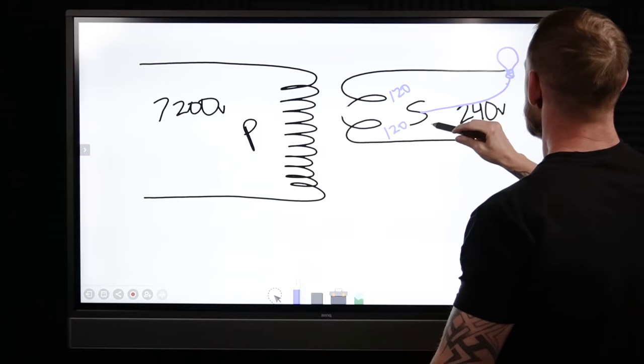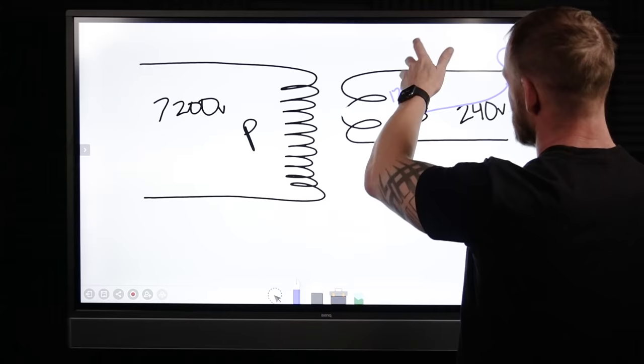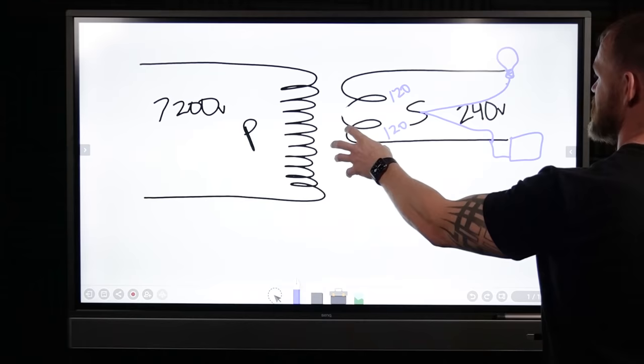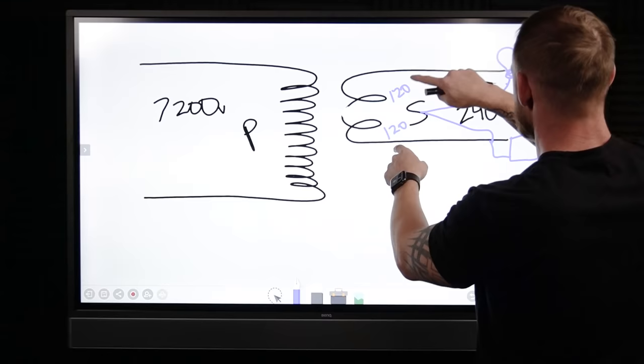So we would have current flowing back and forth 60 times a second on this. And say over here we've got like a microwave. We've got a little cord that goes here, and out of that cord we're tapped into the neutral. So we would have some current that's going from hot to neutral here and some current that's going hot to neutral here.